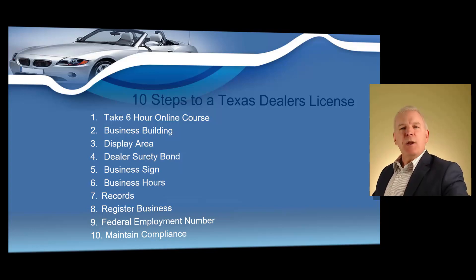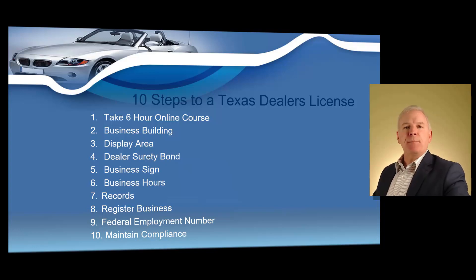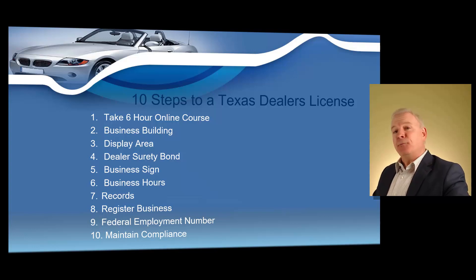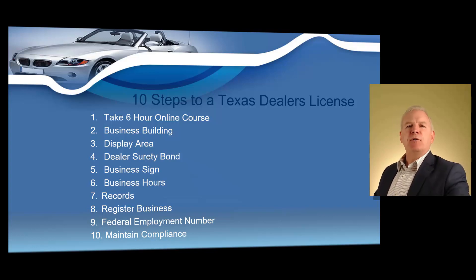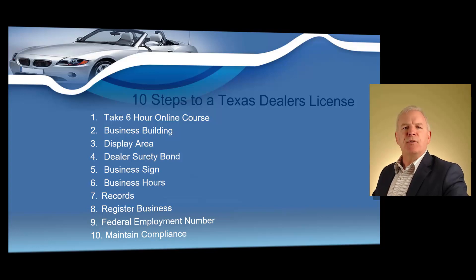Step number four: $25,000 dealer surety bond. You must obtain a $25,000 dealer surety bond in order to obtain a Texas dealer's license. The bond must be issued for two years, and you must maintain your bond during the entire licensure period. You can easily obtain a bond from any bonding company or insurance agency, and with good credit, a $25,000 dealer bond should cost you about $200 to $300 a year.